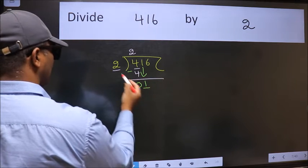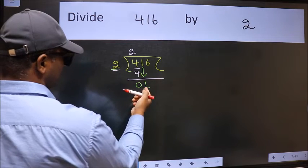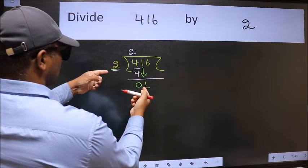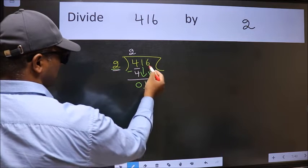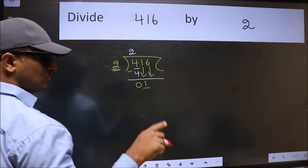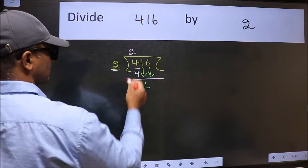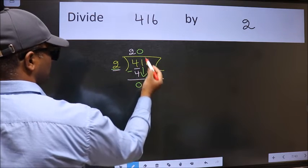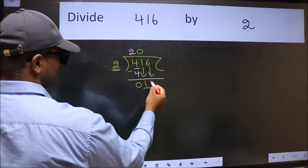Now here we have 1 and here 2. 1 is smaller than 2. So we should bring down the second number. And the rule to bring down second number is we should put 0 here. Then only we can bring down this number.